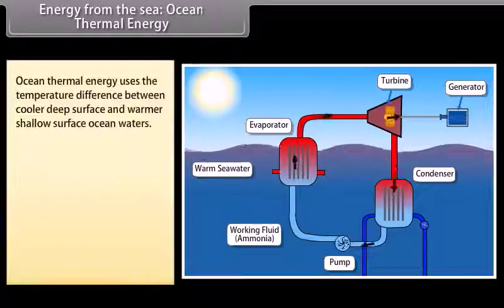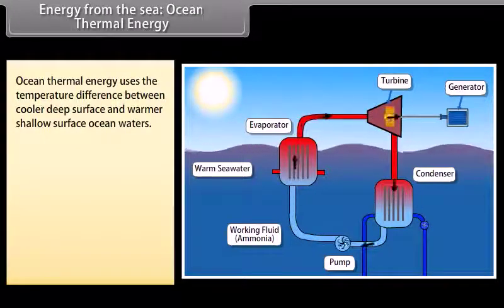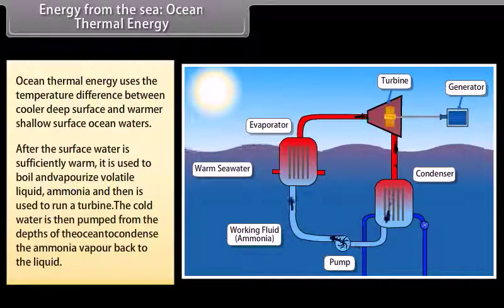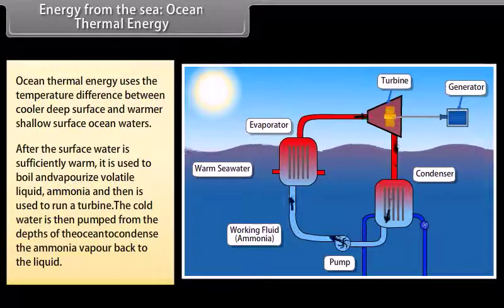Energy from the sea: Ocean thermal energy. Ocean thermal energy uses the temperature difference between cooler deep surface and warmer shallow surface ocean waters to run a heat engine and produce useful form of energy, mainly electricity. The heat engine gives greater efficiency and power when it is run with a large temperature difference. In the oceans, the temperature difference between surface and deep water is greater in the tropical areas, and in other areas it is a modest 20 to 25 degrees Celsius. After the surface water is sufficiently warm, it is used to boil volatile liquid ammonia. The vapors of ammonia are then used to run a turbine. The cold water is then pumped from the depths of the ocean and is used to condense the ammonia vapor back to the liquid.